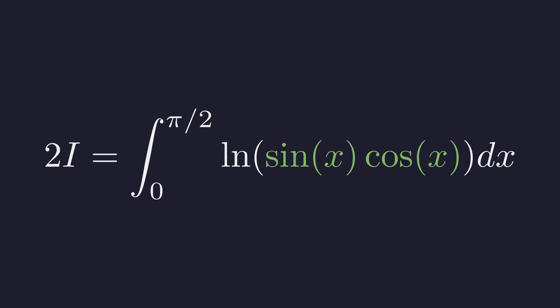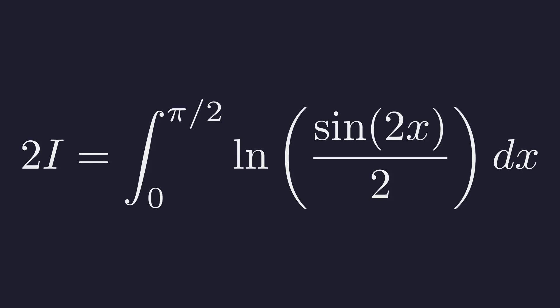Recall that sine of 2x equals 2 sine x cosine x. By rearranging the identity, we can substitute sine of 2x divided by 2 into our integral.